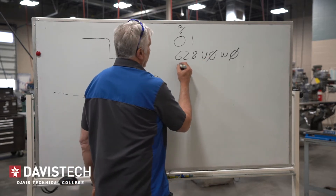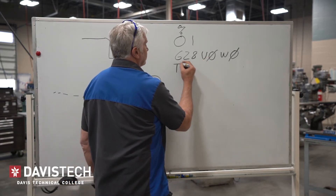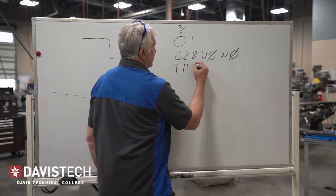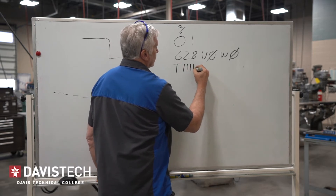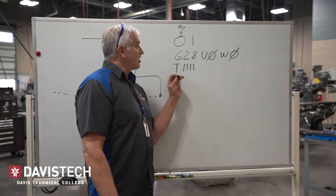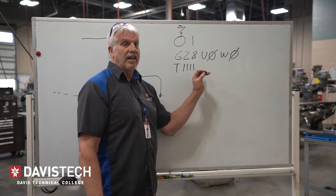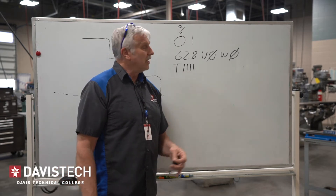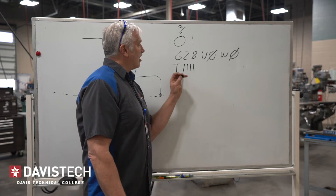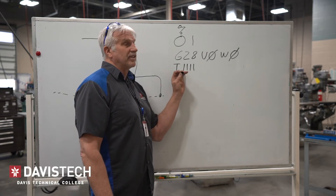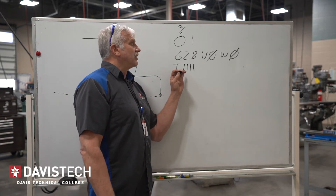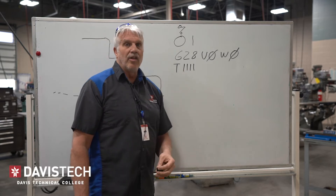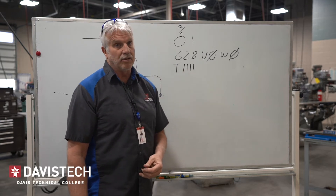The next thing we're going to do is call up our tool. In this particular case, the tool we're going to use is a DNMG. So this calls up the tool — there's no M06 like you would see in a milling operation. The first two numbers represent the station number and the last two numbers tell it the radius and the orientation of the tool.